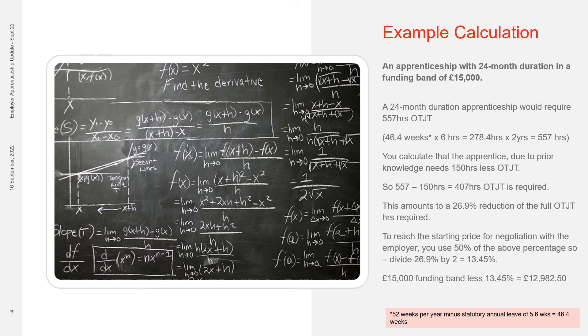Obviously you may take other costs into account with the employer, which might reduce that £12,982.50 further, such as large learner cohorts.